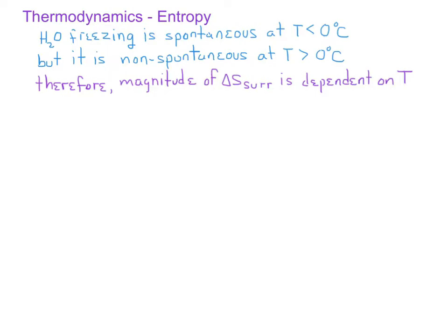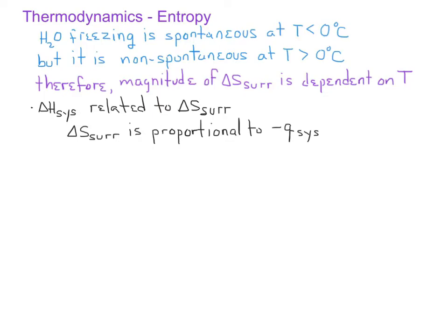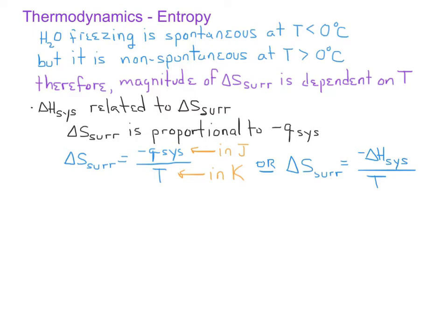We've already seen that the enthalpy change of the system is related to the entropy change of the surroundings. In general, the magnitude of the change in entropy of the surroundings is proportional to the magnitude of the heat released by the system. We can quantify this relationship by saying that the change in the entropy of the surroundings is equal to the opposite of the heat lost by the system divided by the temperature, where heat Q is in units of joules and temperature T is in units of Kelvin. We've also seen that if we have a system under constant pressure, then Q equals the enthalpy change of the system. Therefore, we can also write: ΔS_surroundings = −ΔH_system / T.